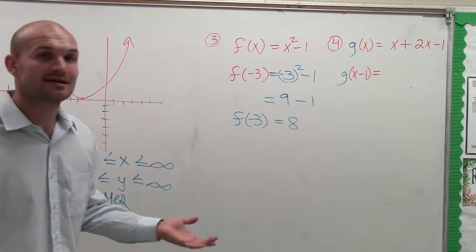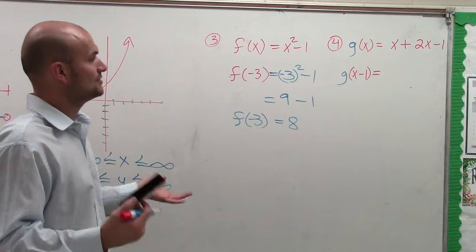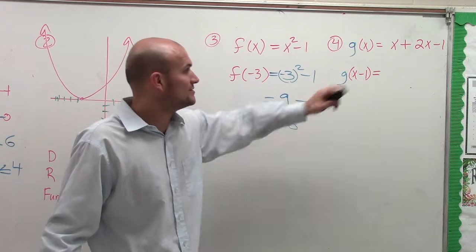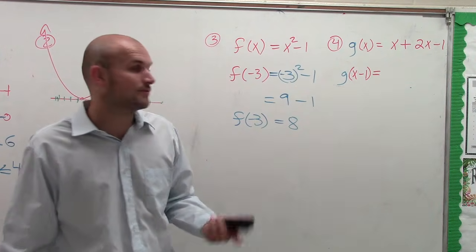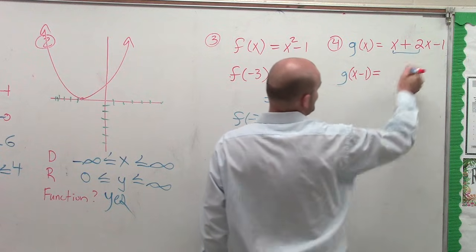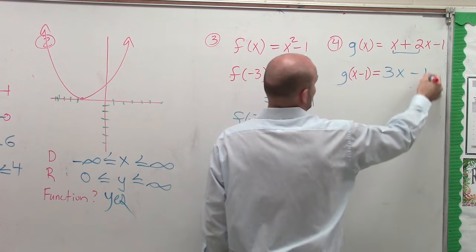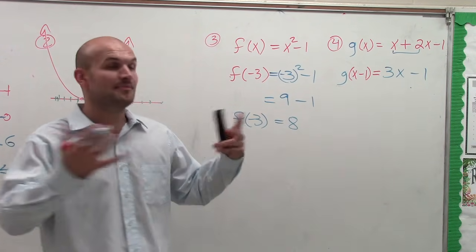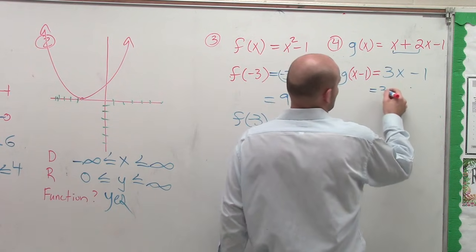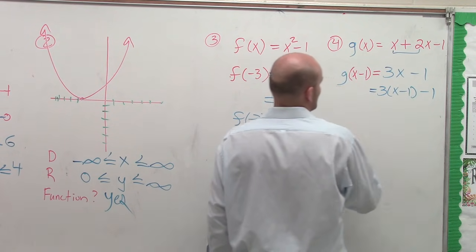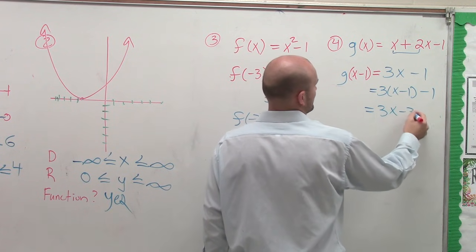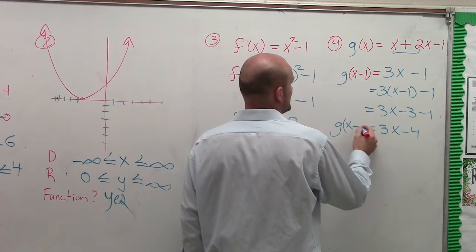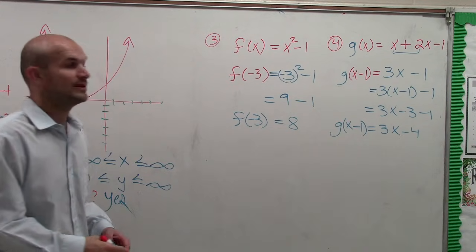Now, for g of x: g of x says the value of g of x is equal to x plus 2x minus 1. It doesn't matter what I'm evaluating for — I still want to evaluate for x minus 1. The first thing I'm going to do is combine these two terms, so I get 3x minus 1. Then I want to find the value of g for x minus 1, not x. So rather than plugging in an x, I'm now going to plug in 3 times x minus 1. Therefore, using the distributive property, I get 3x minus 4. So the value of g of x minus 1 is equal to 3x minus 4.